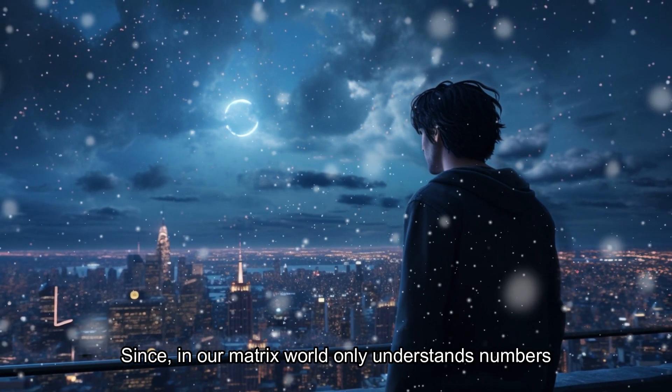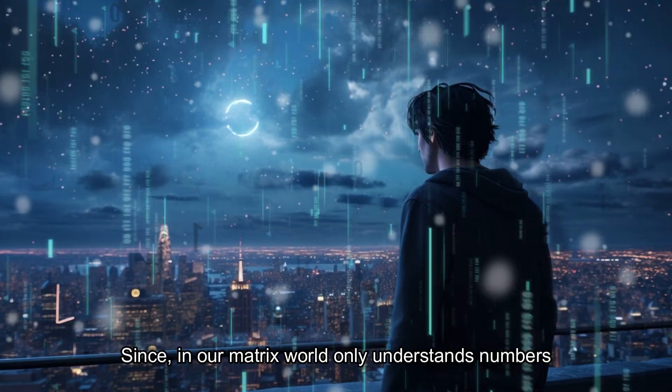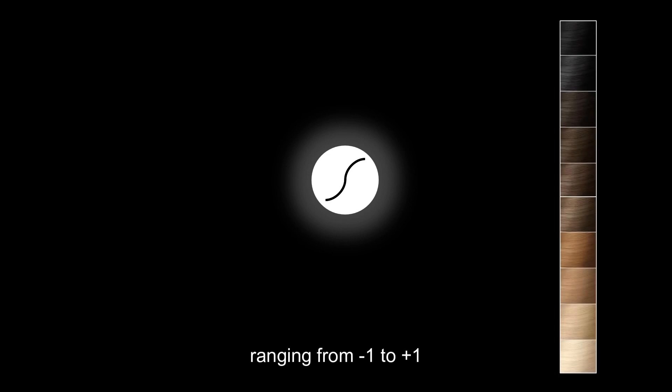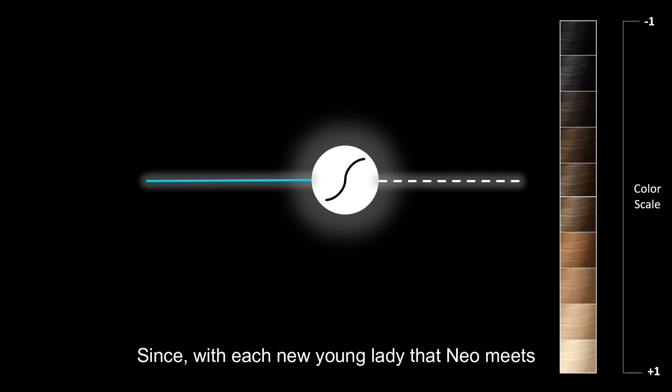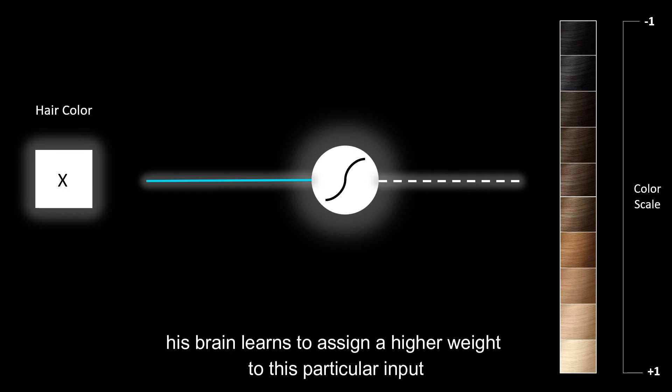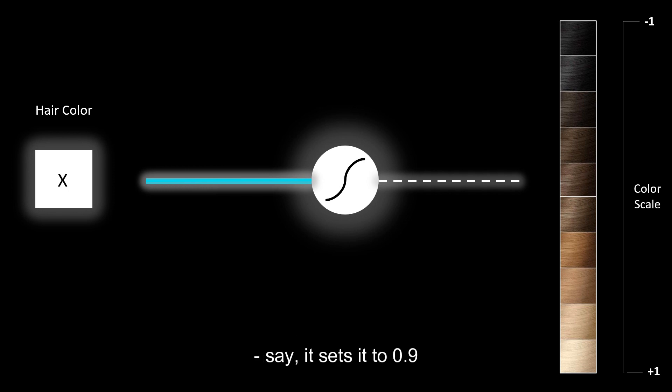Since our matrix world only understands numbers, let us assign the various hair colors an arbitrary scale ranging from minus one to plus one. Since with each new young lady that Neil meets he pays special attention to her hair color, his brain learns to assign a higher weight to this particular input. Say it sets it to 0.9.